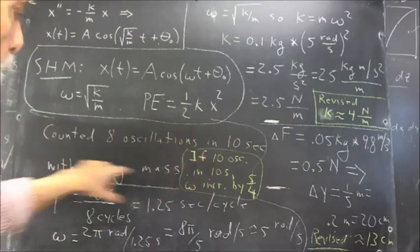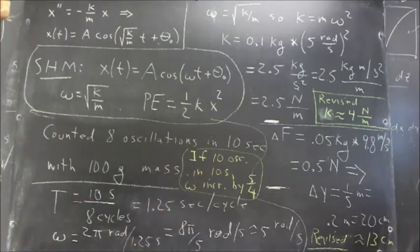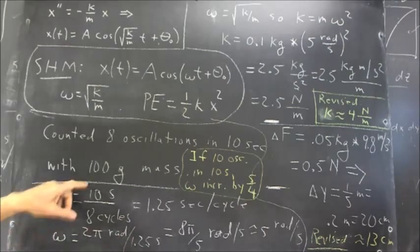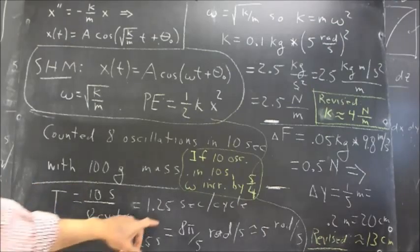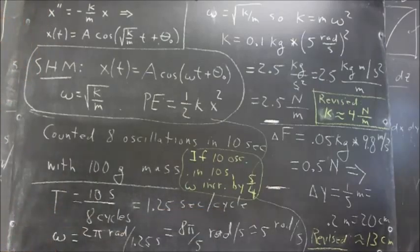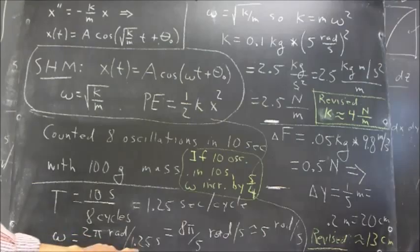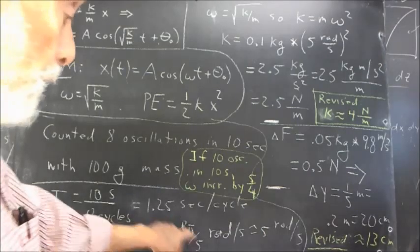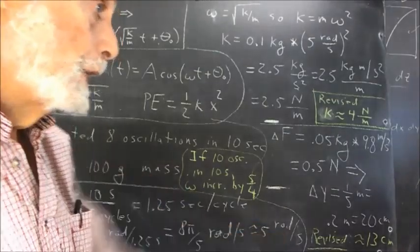Using the eight oscillations in ten seconds, and we'll come back to the revised count, we get a period of oscillation, ten seconds over eight cycles, which is 1.25 or five-fourths second per cycle. And omega is two pi radians over the 1.25 seconds, which comes out eight pi over five, or about five radians per second.